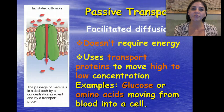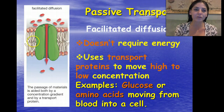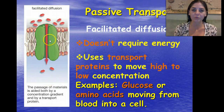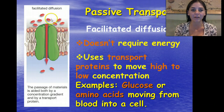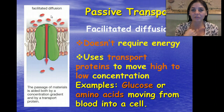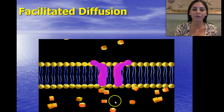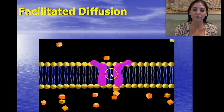Facilitated diffusion is like using a door, and an example would be glucose. It's still going from a high concentration down the concentration gradient to a lower concentration, but it requires a transport protein because these molecules can't get through the small spaces of the plasma membrane phospholipid bilayer. So they have to use that transport protein, just like I have to use the door to get into the classroom. Here's an example of facilitated diffusion — going from a high concentration using those transport proteins to a lower concentration.